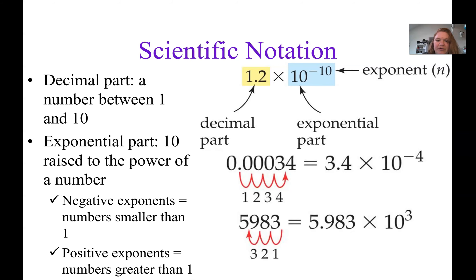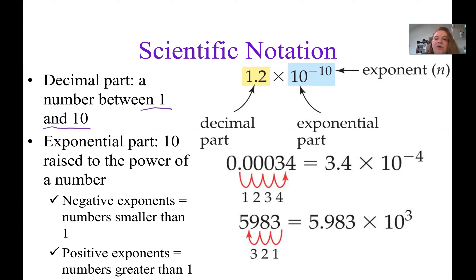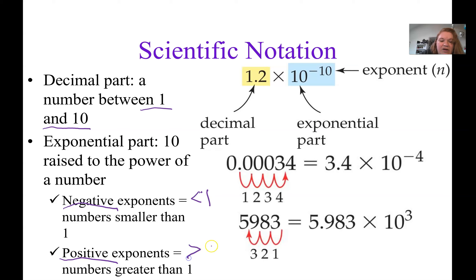The first part is what we refer to as the decimal part, and this will always be between 1 and 10. The second half is called the exponential part and will always be written as 10 to the power of an exponent. If we have a negative exponent, that means our number in standard notation is less than 1. If we have a positive exponent, that means our number in standard notation is greater than 1.